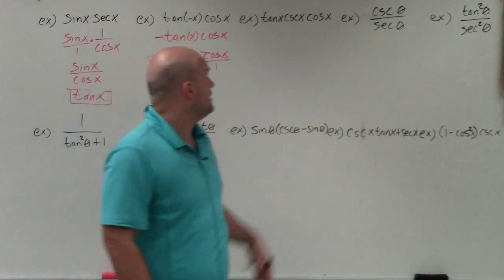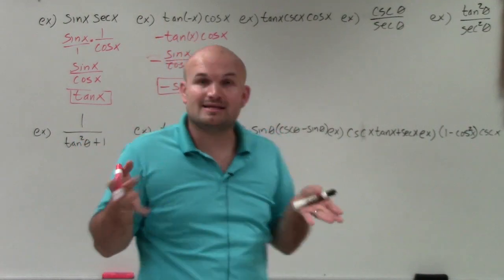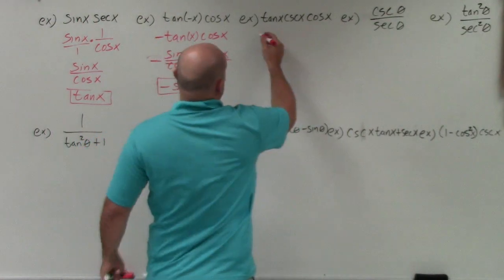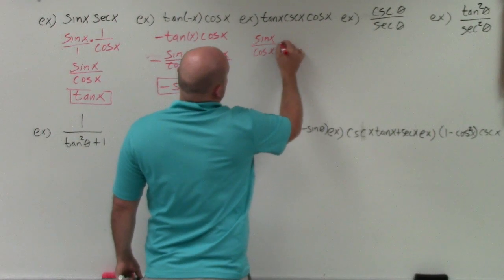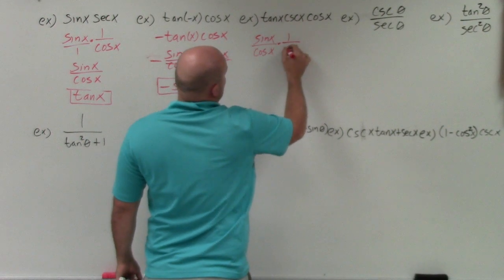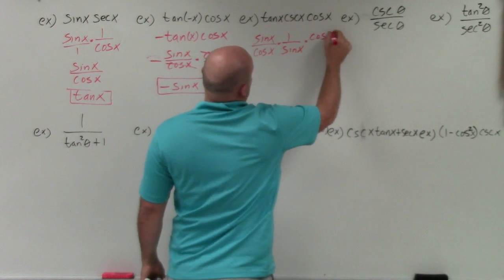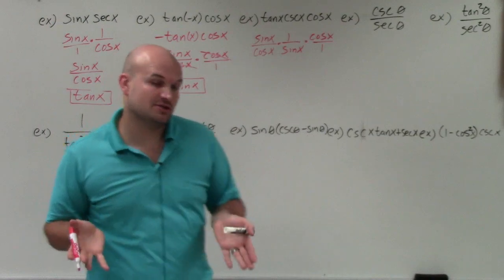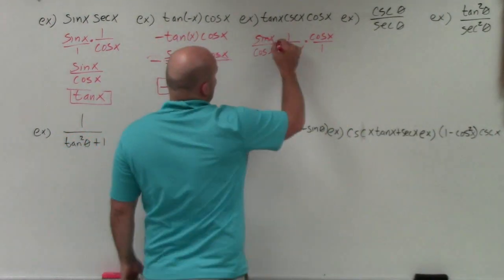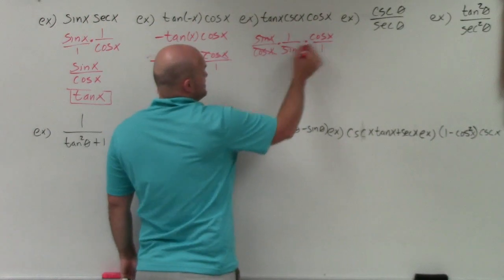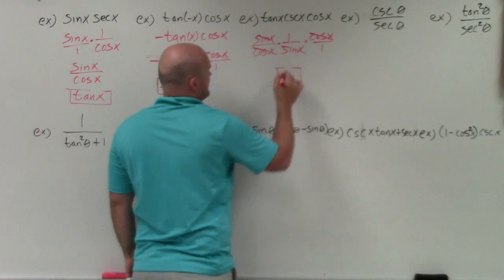In this example I have three terms that I'm multiplying, so I'll rewrite them in terms of sines and cosines. Tangent of x is sine of x over cosine of x. Cosecant of x is 1 over sine of x. And cosine of x can be rewritten over 1. I divide out the same terms in the numerator and denominator: sine of x and cosine of x both cancel, leaving 1 over 1, which is just 1.